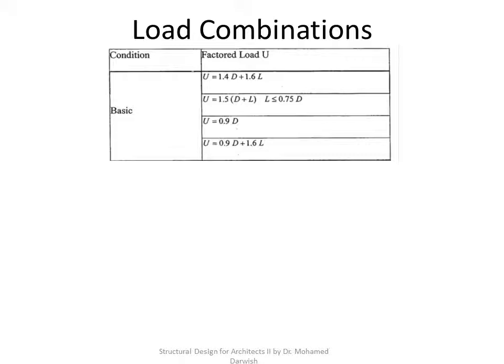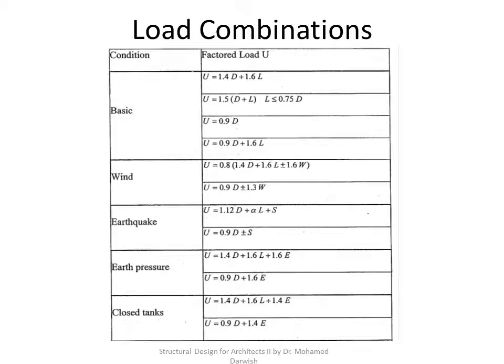If the dead load is actually a restoring force — for example, the weight of a cantilever — and you need the bending moment at mid span, you deal with it as a restoring force and factor it down to 0.9 instead of 1.4. Wind, earthquake, earth pressure, and closed tanks are all secondary load cases. When combined with the principal load cases, you add them to the equation but factor the whole combination down by 0.8.